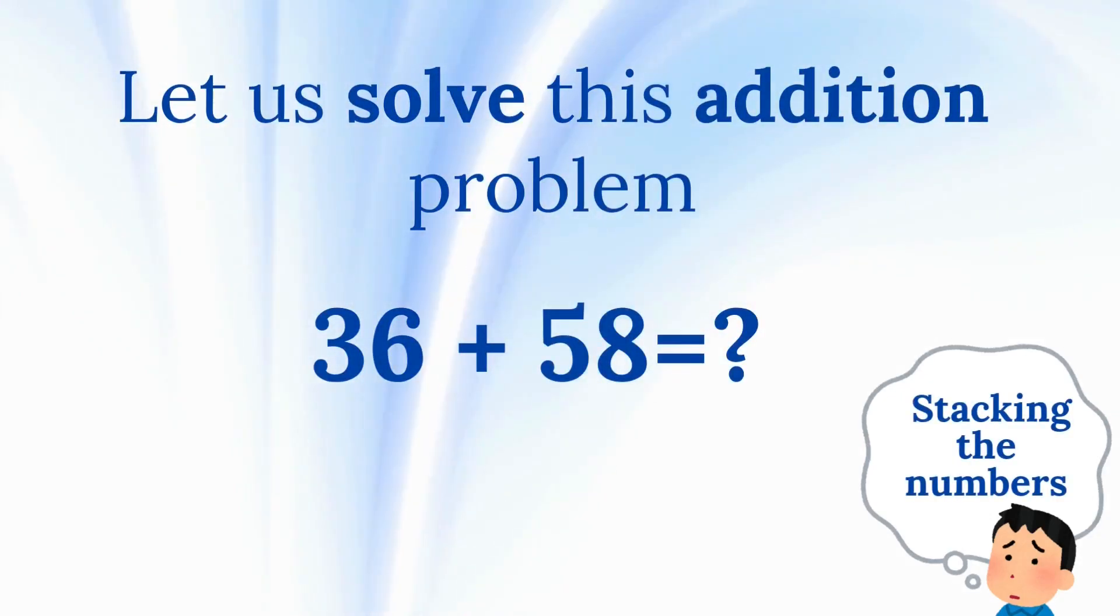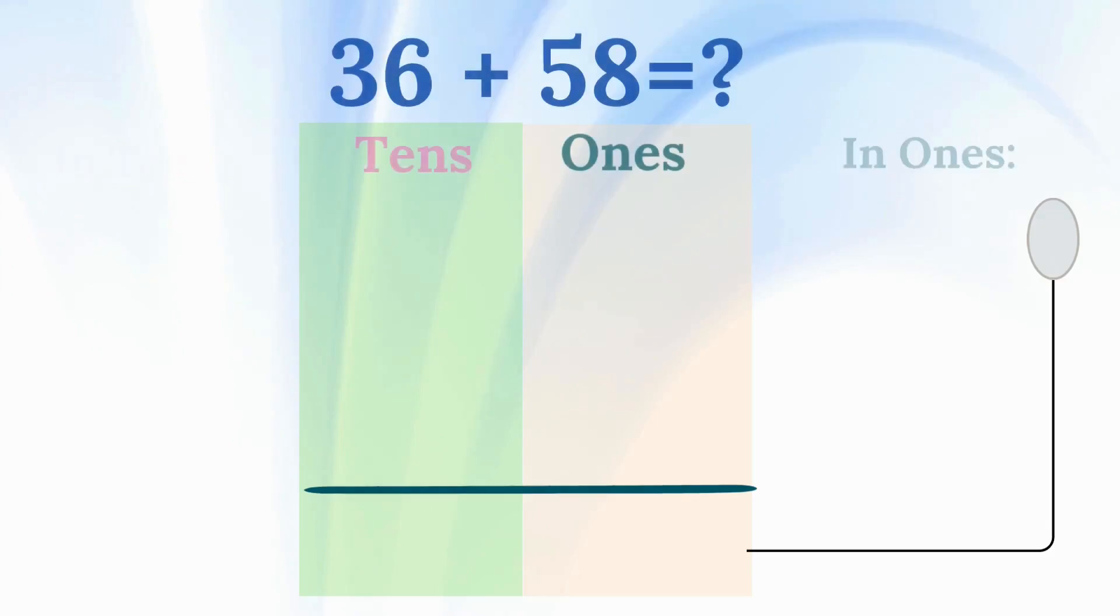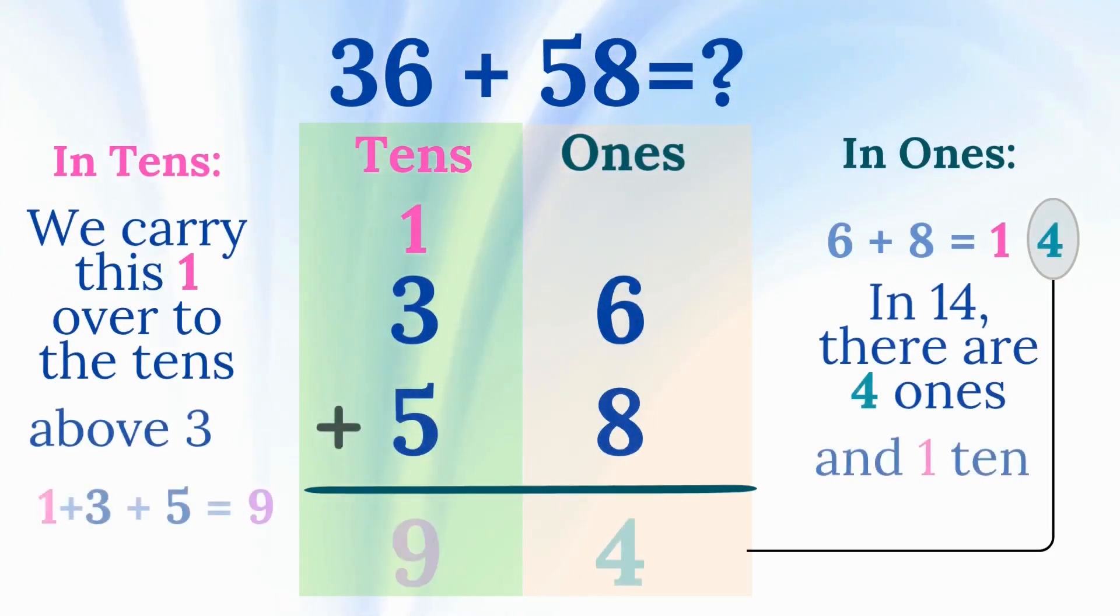Let us solve this addition problem: 36 plus 58. We solve it by stacking the numbers, so the ones and the tens are lined up. The ones place is on the right. The tens place is on the left. We begin by adding the numbers in the ones place. 6 plus 8 equals 14. In the number 14, there are 4 ones, so we write 4 in the ones place.